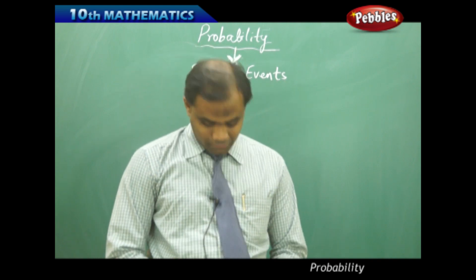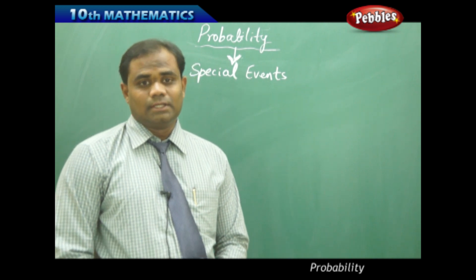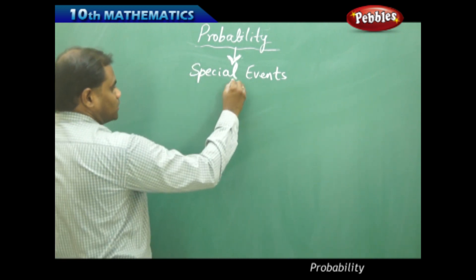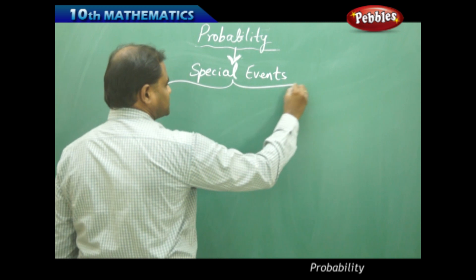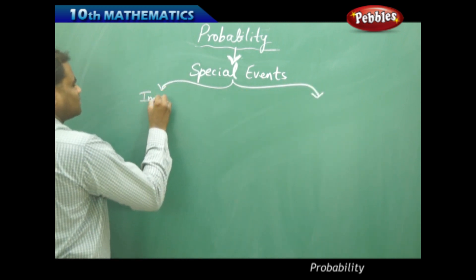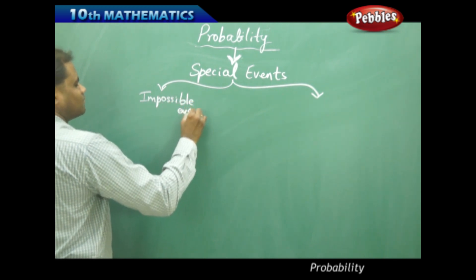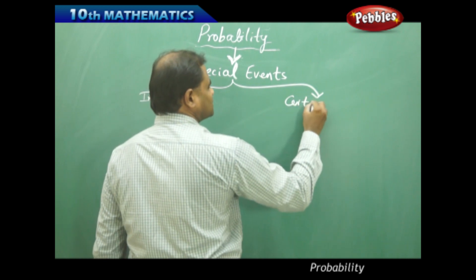There are two types of special events which we identify in the topic of probability. The two special events which we are going to discuss exclusively in this session are impossible events and certain events.